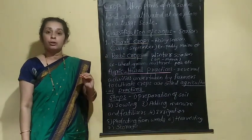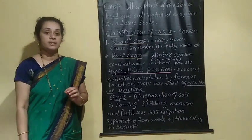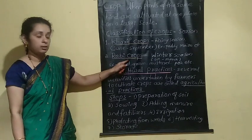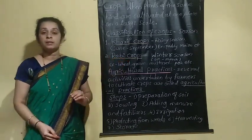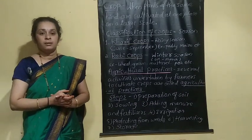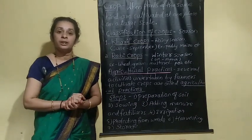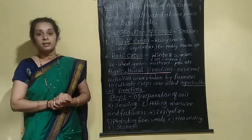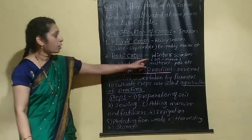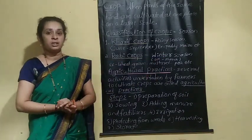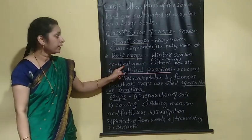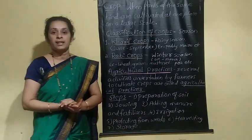The second type is rabi crops. Rabi crops are the crops which are grown in the winter season. In India, the winter season is October to March. Examples of rabi crops are wheat, mustard, pea, etc.